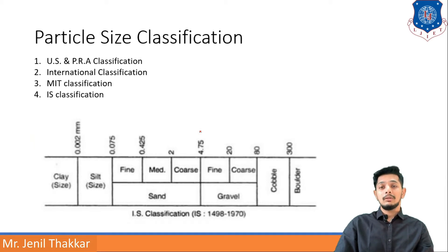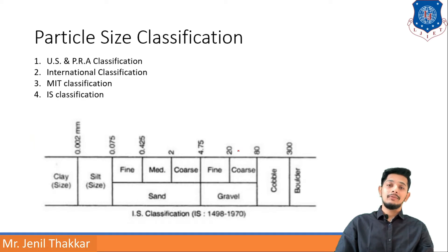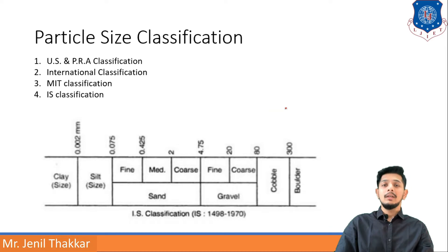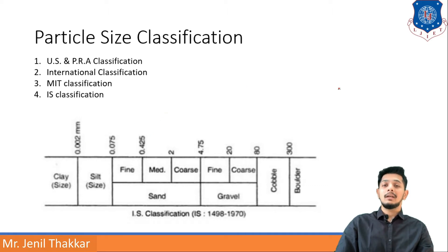Gravels are also classified as fine and coarse. From 4.75 mm to 20 mm they are fine gravels, and from 20 mm to 80 mm they are coarse gravels. If the particle size is greater than 80 mm up to 300 mm it will be a cobble, and if the size is greater than 300 mm they will be boulders. If more than 50% of particles fall in a given range, we define the soil type accordingly.